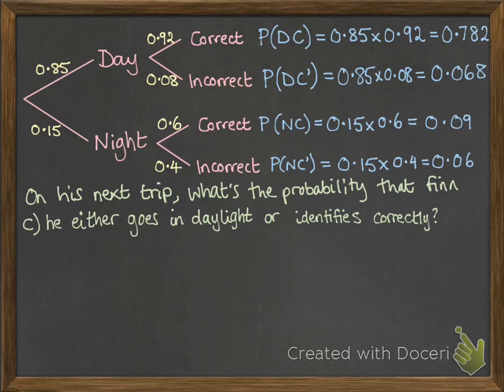Okay, what about the probability that he either goes in daylight or identifies the vessels correctly? So to cover all of those possibilities, we need everything that's at day, first of all. So he could go at day and be correct or go at day and be incorrect. Or he identifies correctly. So he could also go at night and be correct. Now, this is an or situation. That means we're going to add together all of those probabilities.